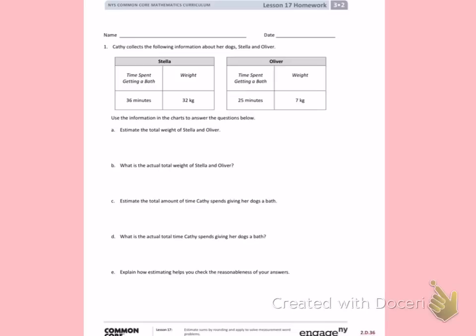Today's objective was to estimate sums by rounding and apply to solve measurement word problems. Number 1. Kathy collects the following information about her dogs, Stella and Oliver. I can see that Stella takes a bath and it takes about 36 minutes for that bath, and Stella weighs 32 kilograms. Oliver's bath lasts for 25 minutes, and his weight is 7 kilograms. I will use the information in the charts to answer the questions below.